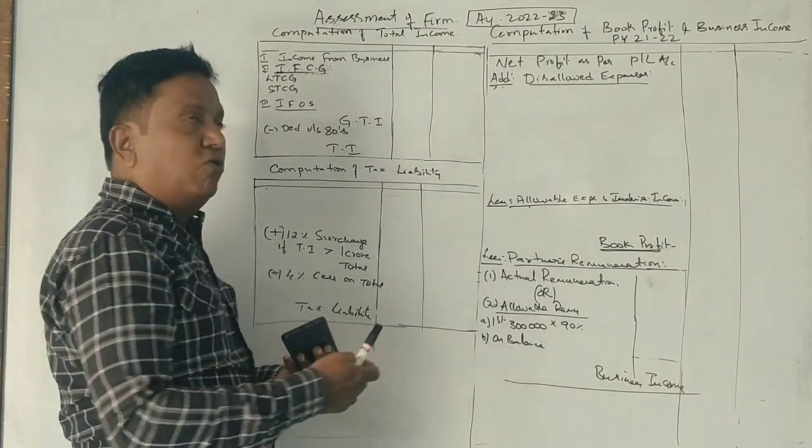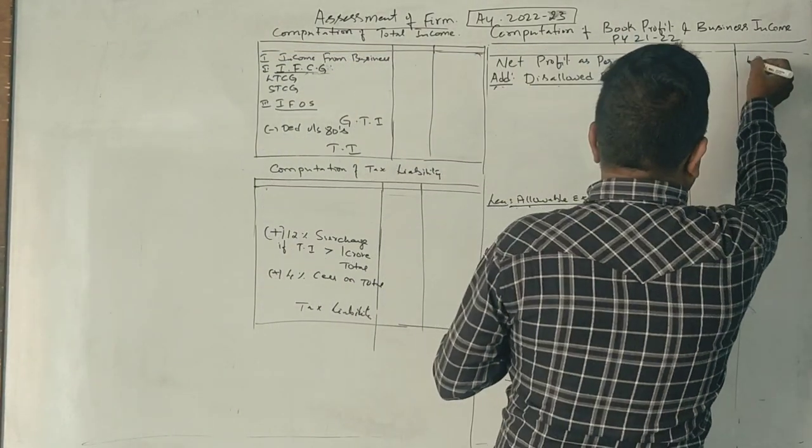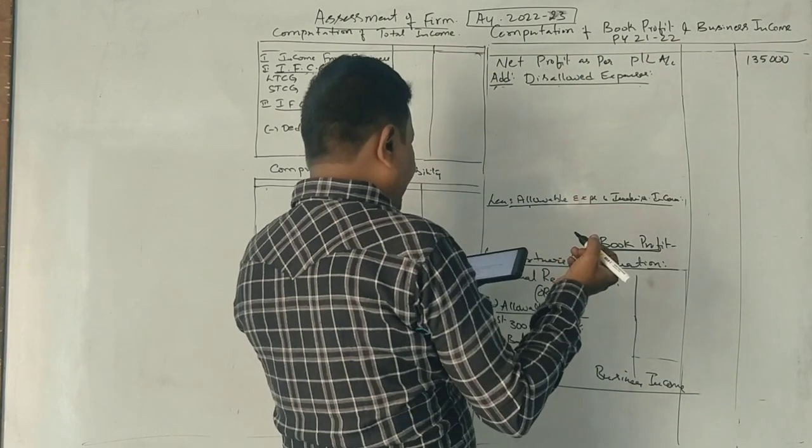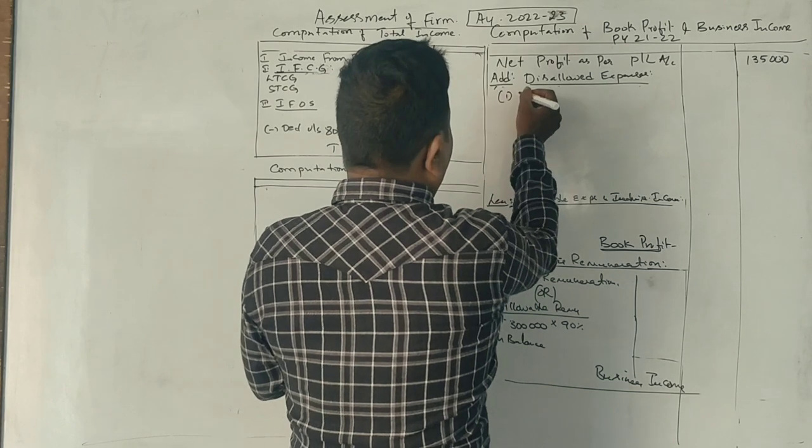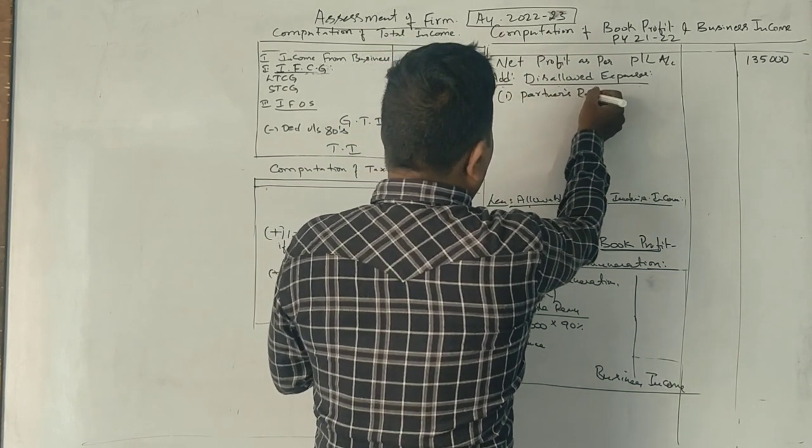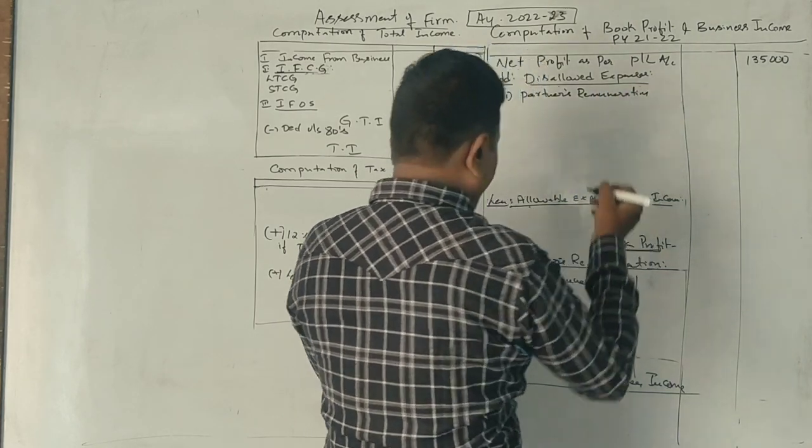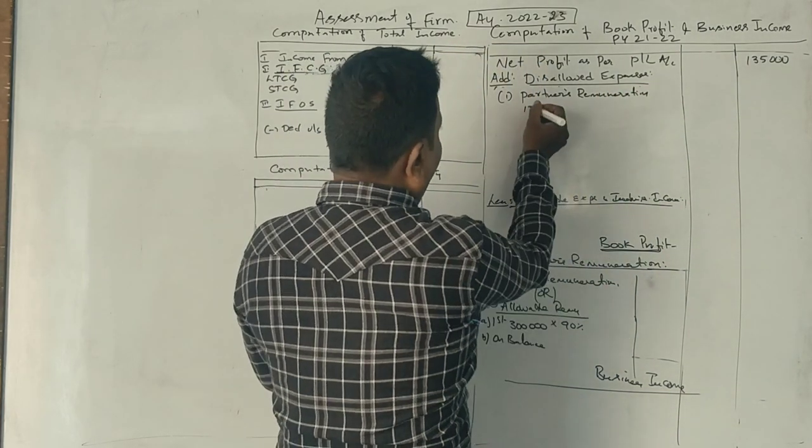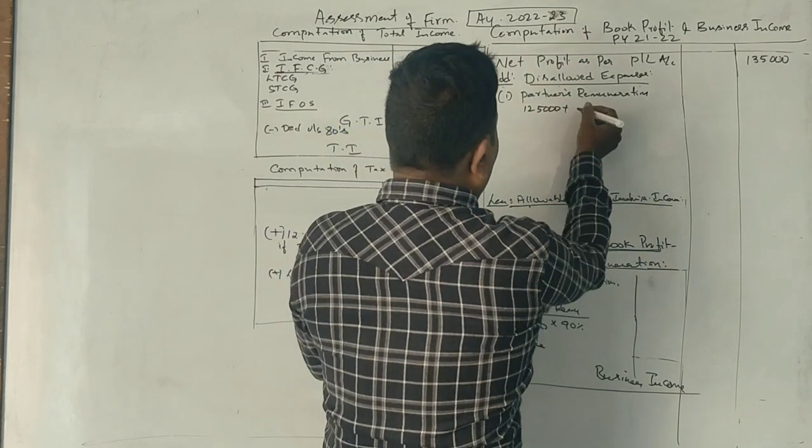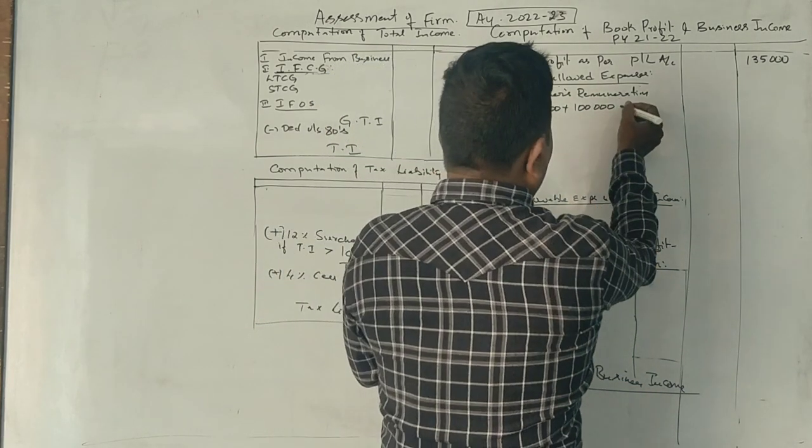This is the rule. The first rule is Rs. 1,35,000, that is the net profit. Now, the first item is salary Rs. 1,25,000. The second is commission Rs. 1,00,000, and bonus is Rs. 25,000.